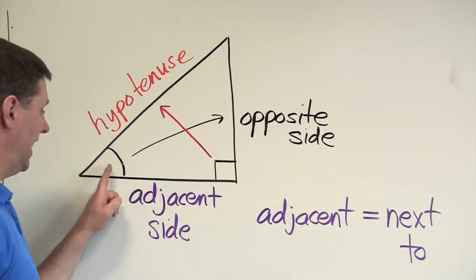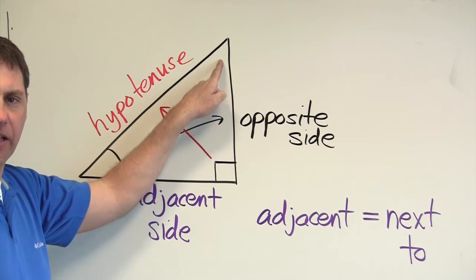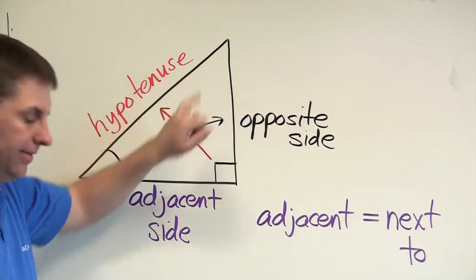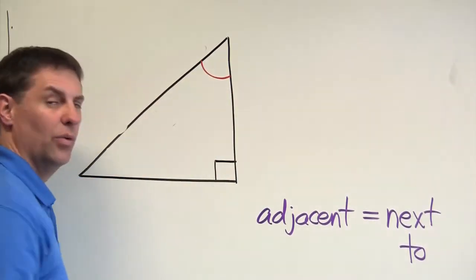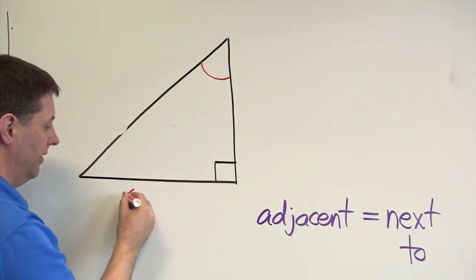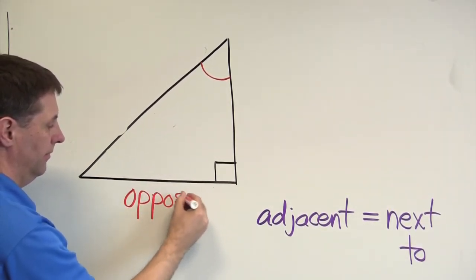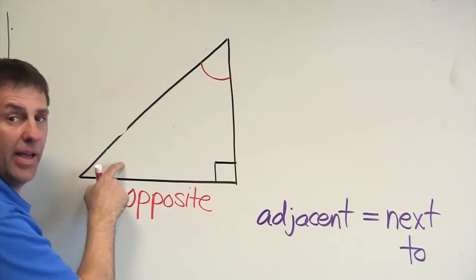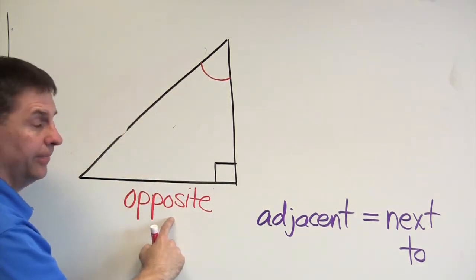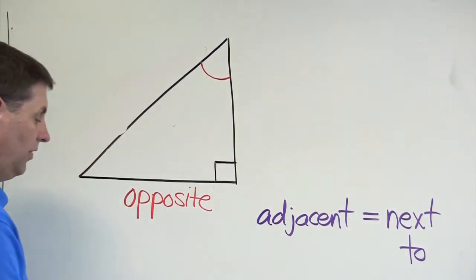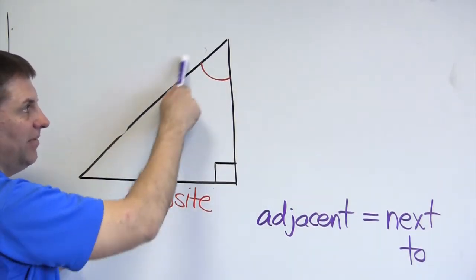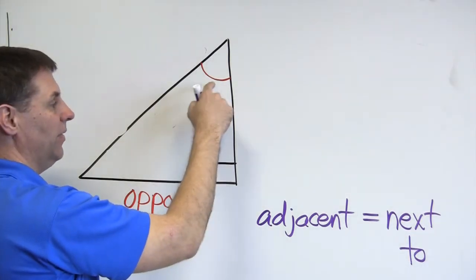My point of reference isn't always the bottom angle. If I use the angle at the top instead, the sides change. The side that was previously adjacent becomes the opposite side. Adjacent still means next to, so the side next to the new reference angle is different — just be careful not to confuse it with the hypotenuse, which is adjacent but not called the adjacent side.